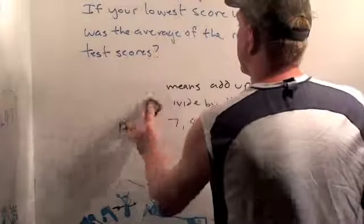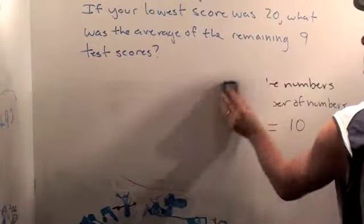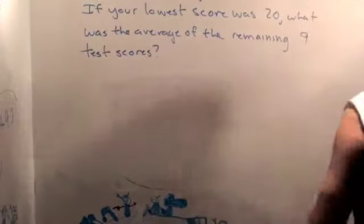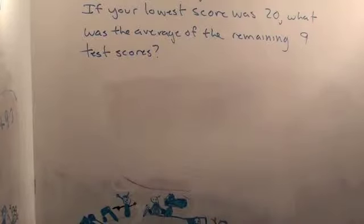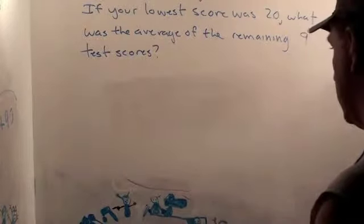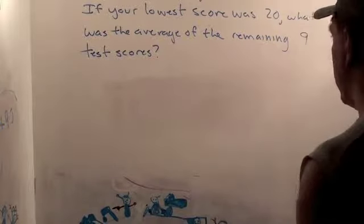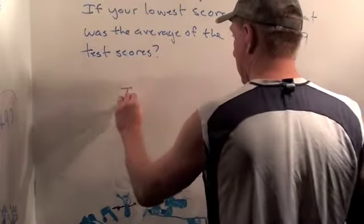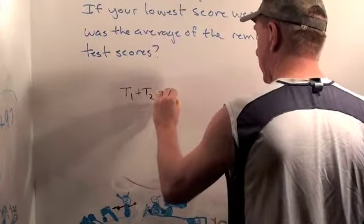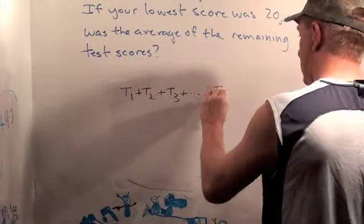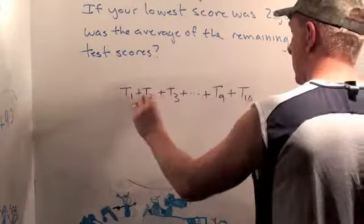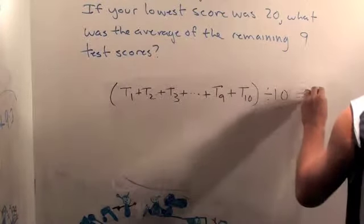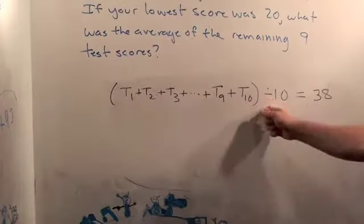So in the problem we're looking at, we had ten tests and the average score was thirty-eight. What does that mean all the test scores added up to? If test one plus test two plus test three plus test nine plus test ten — all of this divided by ten equals thirty-eight. That's what the average is, right? You add up all the test scores, divide by ten.